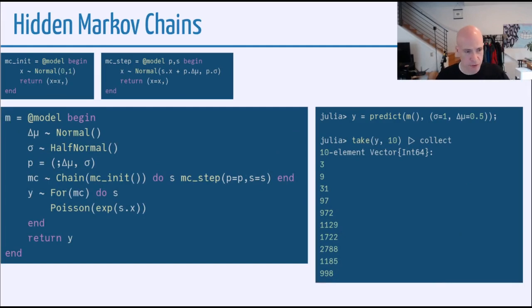Finally, we can also use this for hidden Markov chains. So here's an example where the initialization and the Markov kernel are the same as previously. But now, in addition to our Markov chain, we have a y value that says, for each value in the Markov chain, we're going to call that s, and we're going to draw a Poisson with e to that value. And then we can return y as the final result.